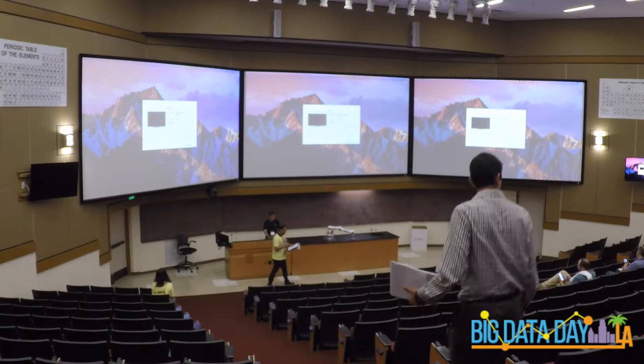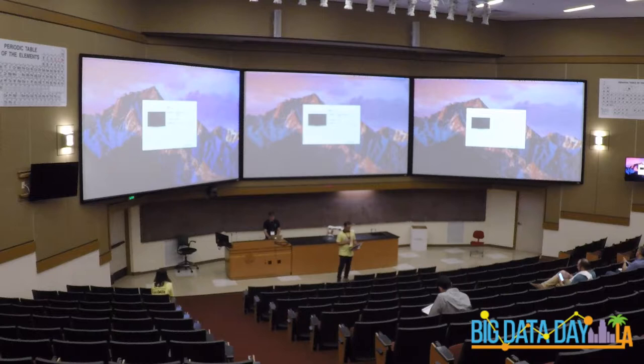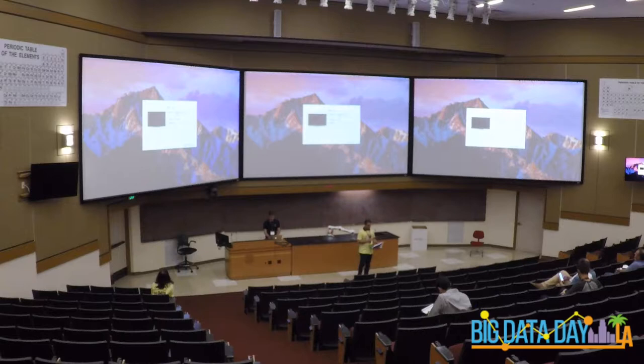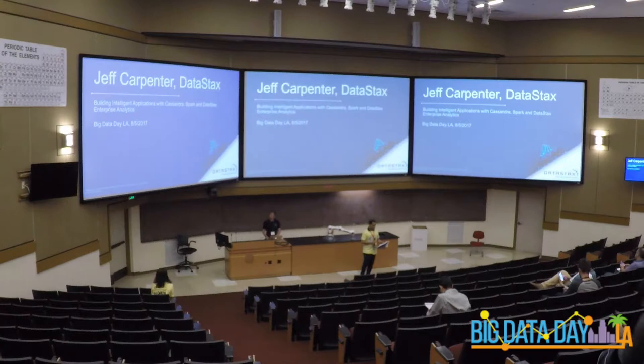Jeff Carpenter is a technical evangelist at DataStax where he leverages his background in system architecture, microservices and Apache Cassandra to help empower developers and operations engineers build distributed systems that are scalable, reliable and secure. Jeff has worked on projects ranging from complex value planning systems in a mature network environment to a cloud-based hotel reservation system. As the author of Cassandra: The Definitive Guide, Second Edition, he'll be presenting a talk titled Building Intelligent Applications with Cassandra, Spark and DataStax Enterprise Modalities.